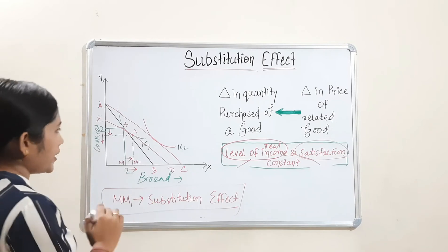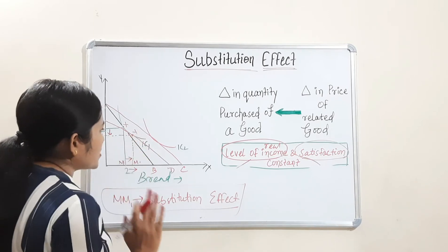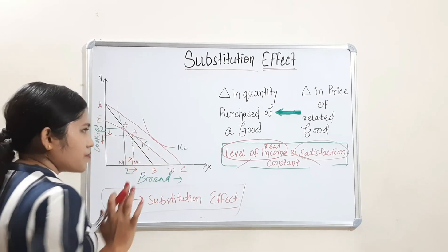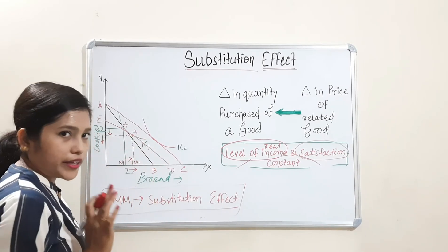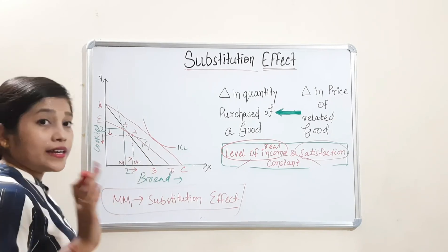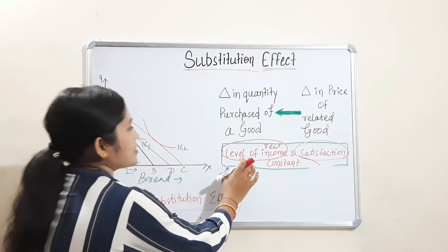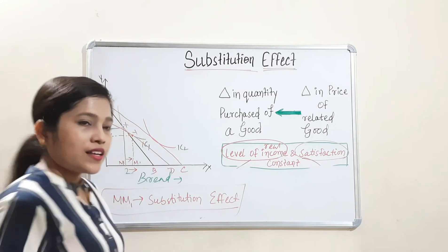So here what we have kept constant is satisfaction — the level of satisfaction is constant. This approach is given by Hicks, with some modification done by Slutsky.